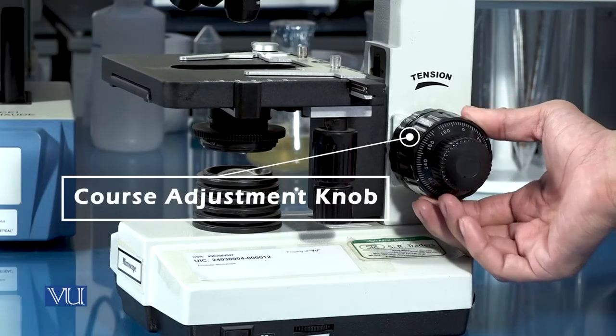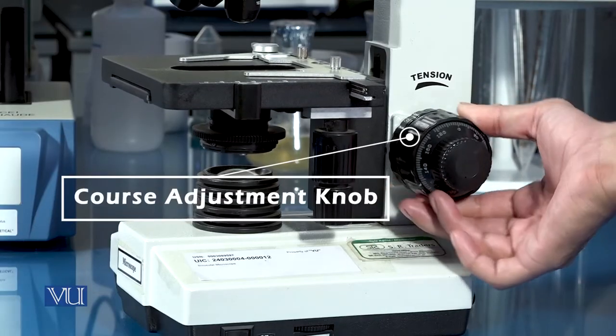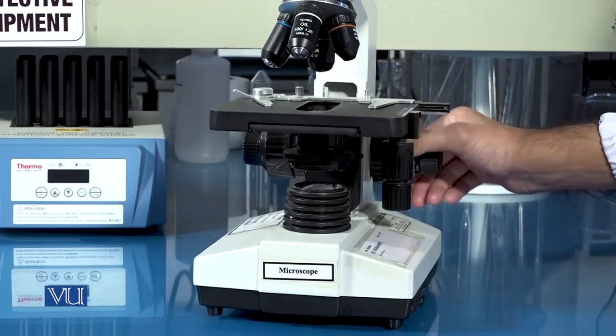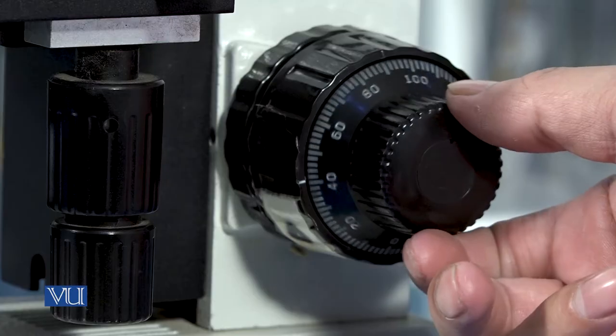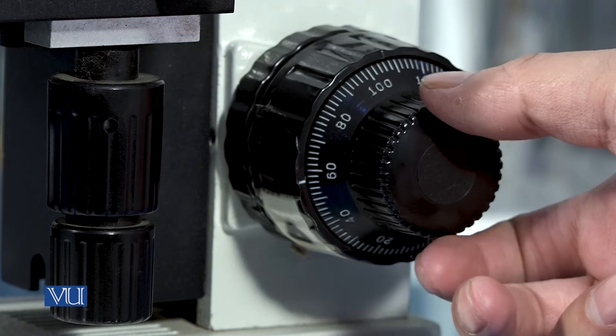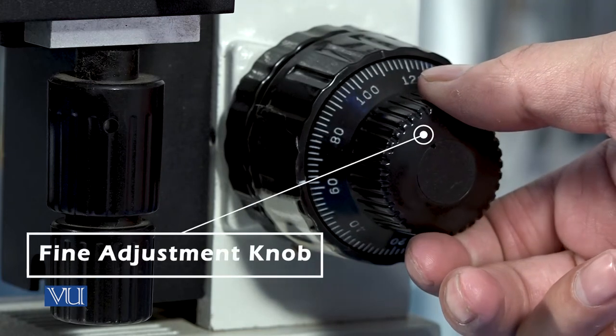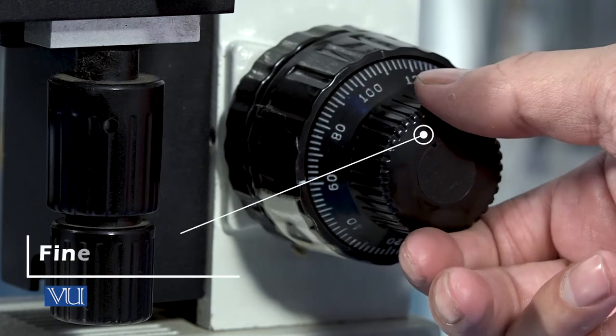The microscope stage can be moved up and down using the coarse adjustment. Once the slide is focused using coarse adjustment, fine focus is used to further improve the resolution of the specimen.